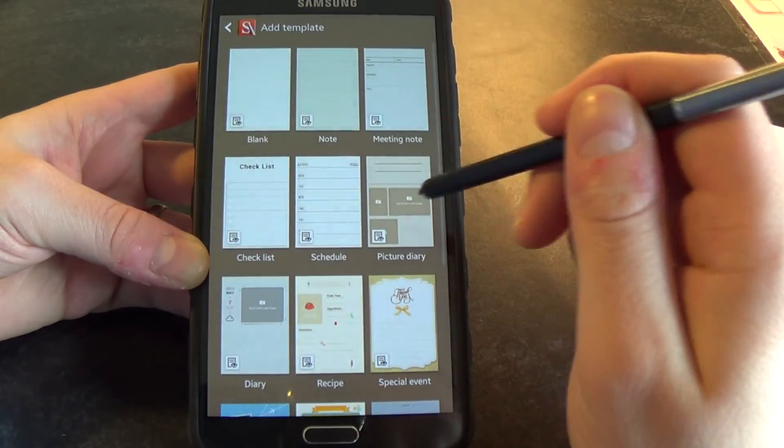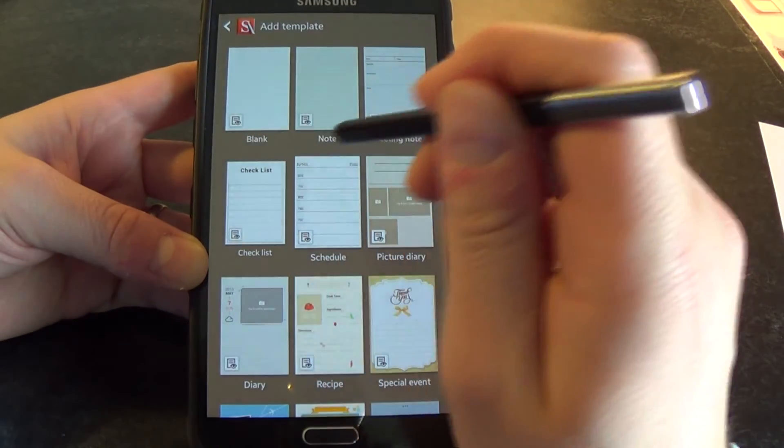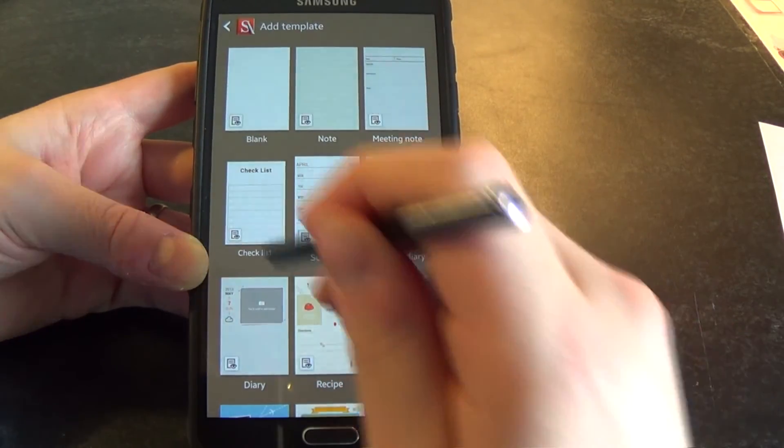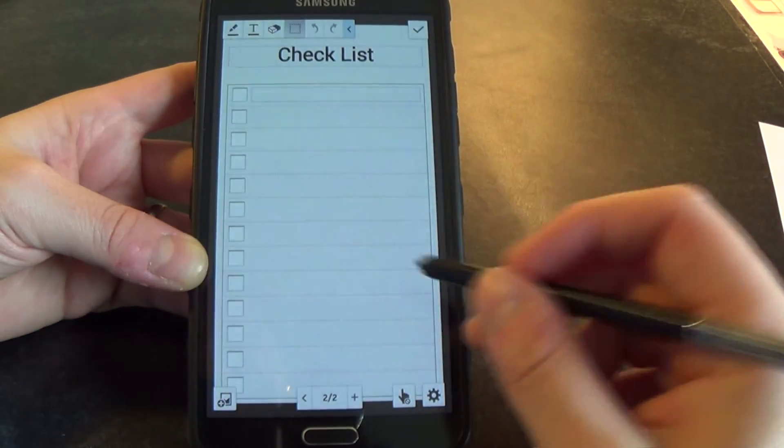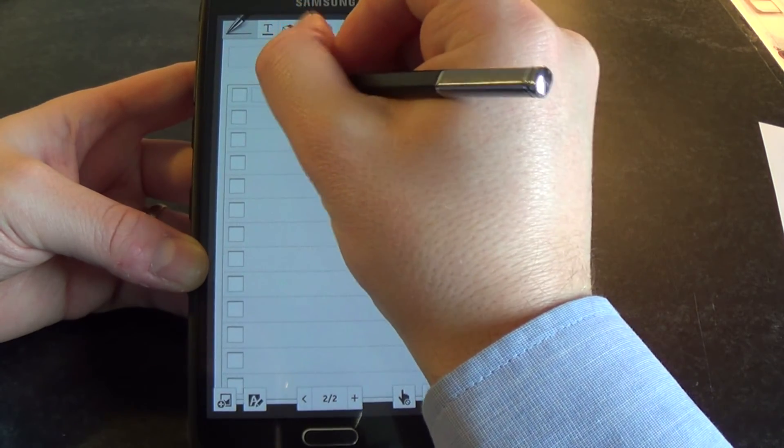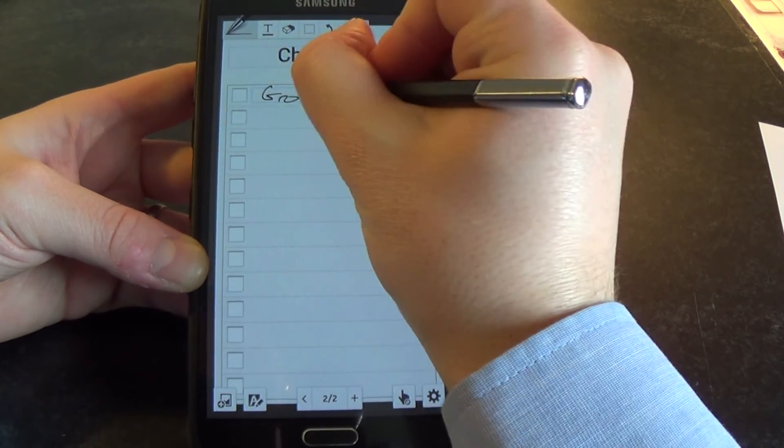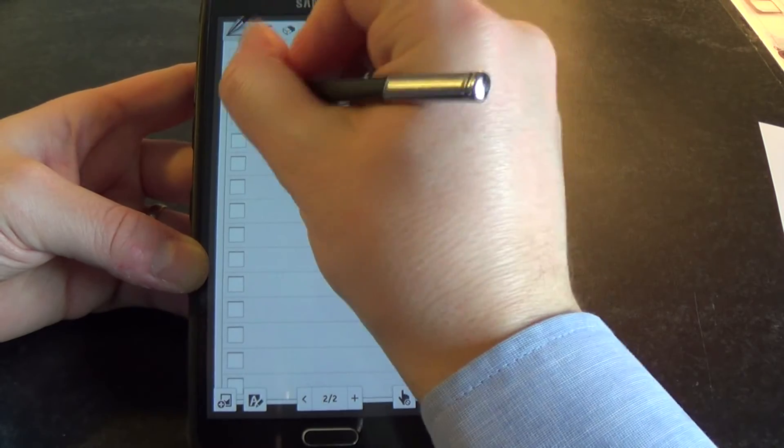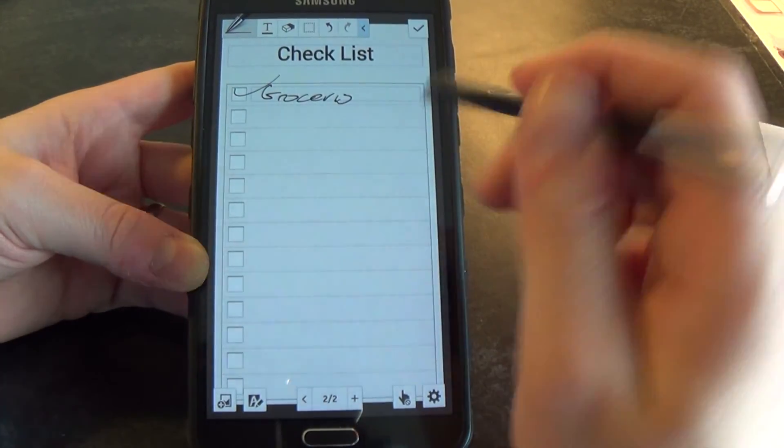Or add a template, so checklist for example. So then you can obviously scribble stuff in and take it off as you go along.